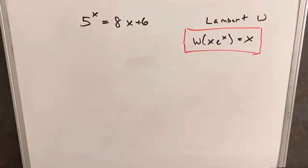Here we have this exponential problem on the board. We have 5 to the x equals 8x plus 6, and we want to try to solve this using the Lambert W function.